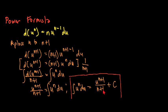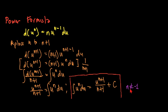There is a condition for this formula: our n must not be equal to negative 1. If n equals negative 1, the denominator becomes zero and the integration becomes undefined. There is another formula to handle the case when n equals negative 1.